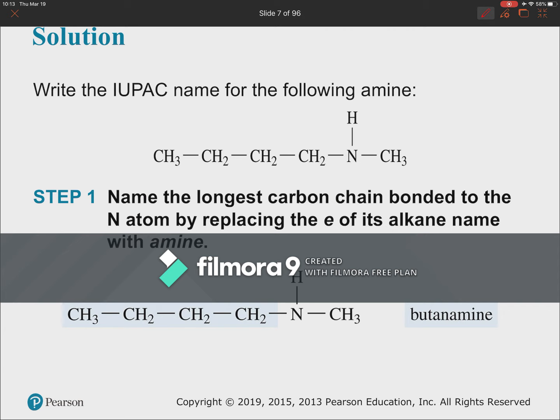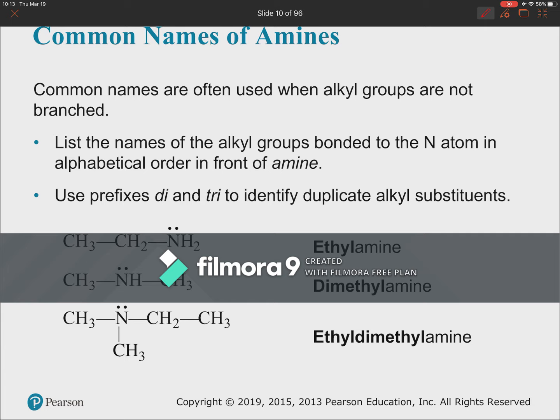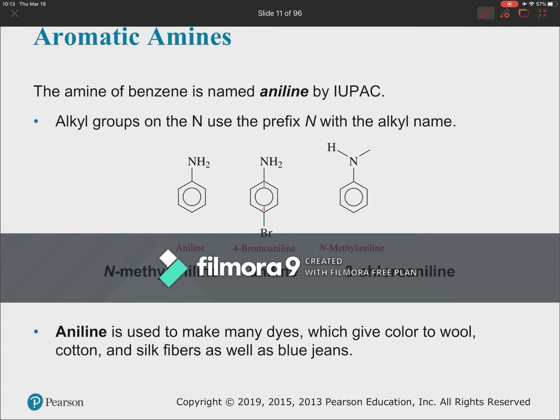Common names are pretty easy — you look at what's on the amine nitrogen. An ethyl group gives ethylamine; two methyls give dimethylamine; two methyls and an ethyl give ethyldimethylamine (alphabetical order). Aromatic amines are amines attached to benzene rings. Benzene with an NH2 gets the special name aniline, and derivatives are named from aniline.